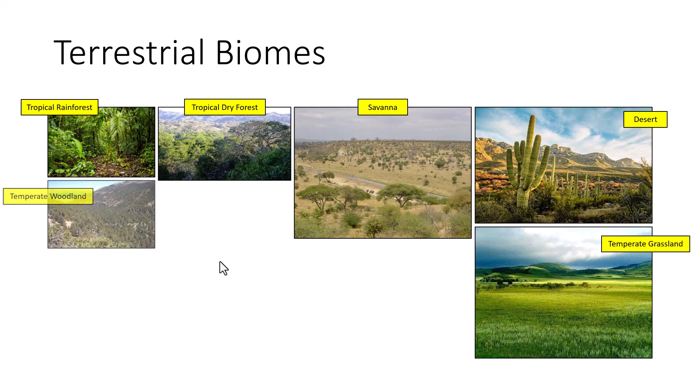Temperate woodland is more arid and rugged — you're going into the foothills of the mountains. There are large areas of grasses and wildflowers with warm, dry summers and cool, moist winters. Soils are thin and nutrient-poor, and there are periodic fires as well. You start getting more coniferous trees here as opposed to the deciduous trees seen in tropical rainforests and dry forests.